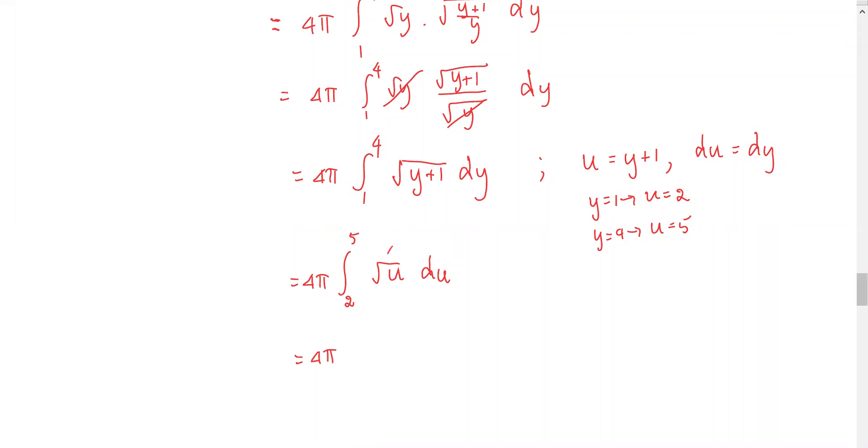Now we get 4pi. u square root u is u to the power 1 half. The antiderivative of u to the power 1 half is u to the power 3 over 2 divided by 3 over 2, or multiplied by the reciprocal, 2 over 3. Evaluate from 2 to 5. We get 8pi over 3 of 5 to the power 3 halves minus 2 to the power 3 halves, or we can rewrite it as 8pi over 3 times the quantity 5 square root 5 minus 2 square root 2.